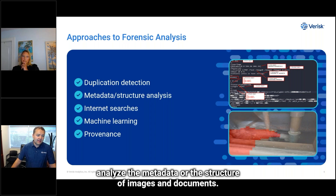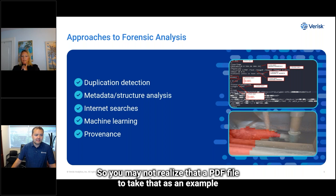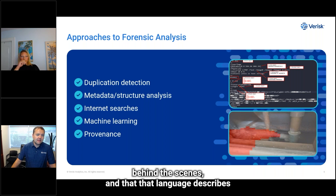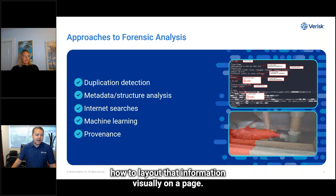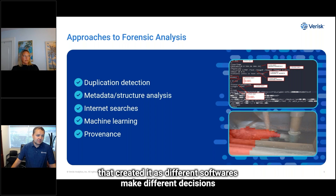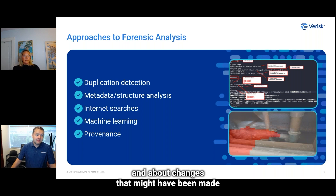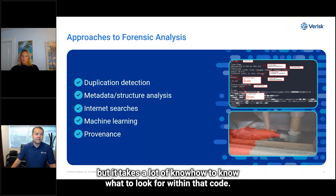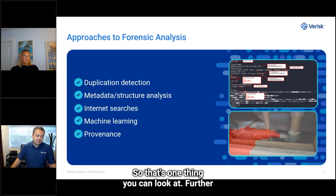Another approach is to deeply analyze the metadata or the structure of images and documents. A PDF file, for example, is actually made up of a bunch of code, a bunch of markup — a language behind the scenes. That language describes how to lay out information visually on a page, and that structure can tell you a lot about the software that created it, since different softwares make different decisions, and about changes that might have been made after the original file was created. But it takes a lot of know-how to know what to look for within that code.